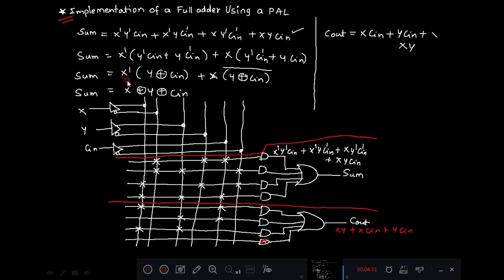This can be expanded if you take X dash Y XOR CN plus X Y XOR CN bar. Then further you expand, you will get these four product terms. And these four product terms need to be implemented to calculate sum.